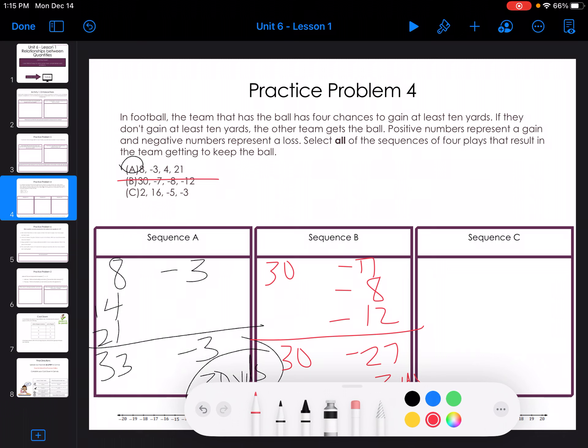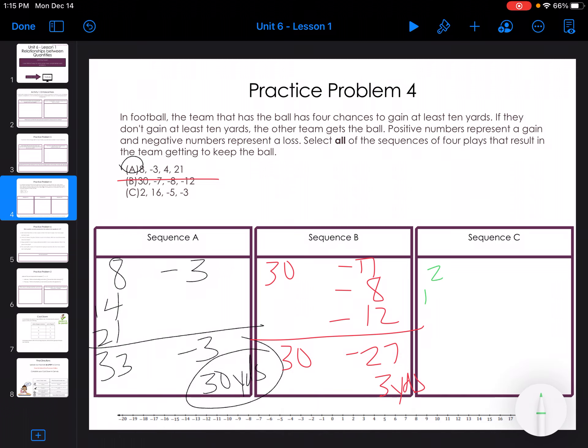Let's try C. So I have 2, 16, negative 5, negative 3. So I have 18 over here and negative 8 over here. My signs are different. I subtract, so I get 10 yards. It says as long as I get 10 yards at least, that means that includes the 10. So C works.